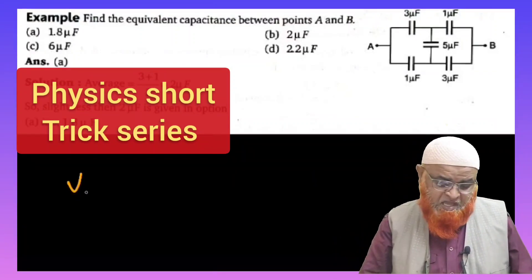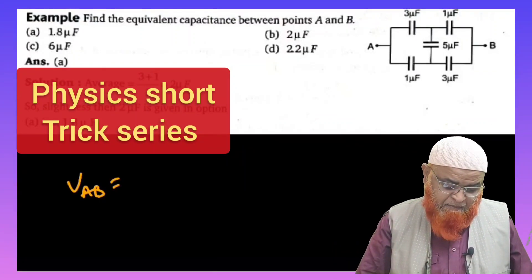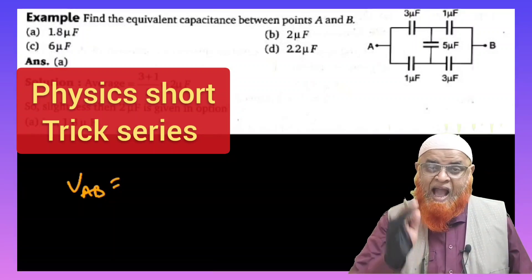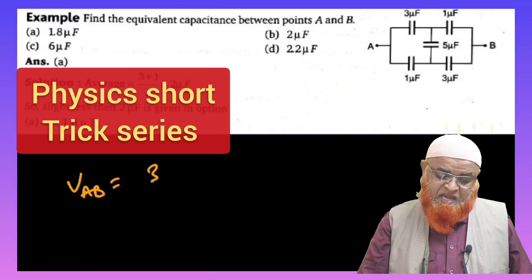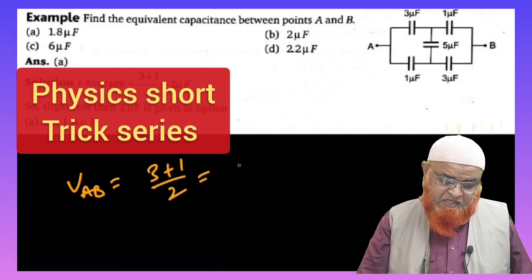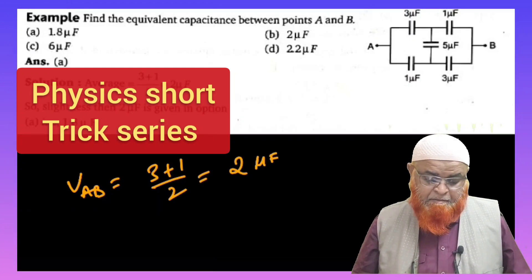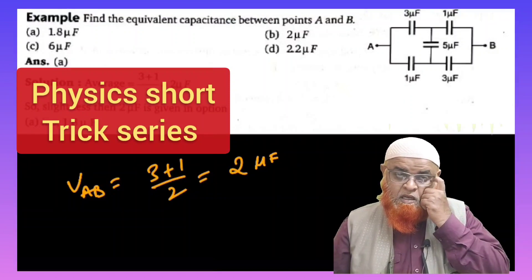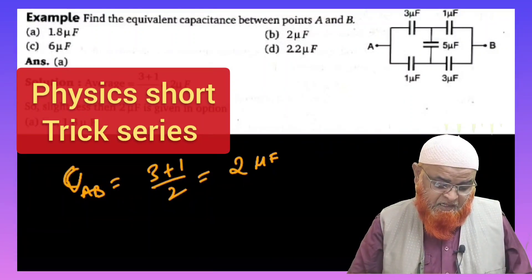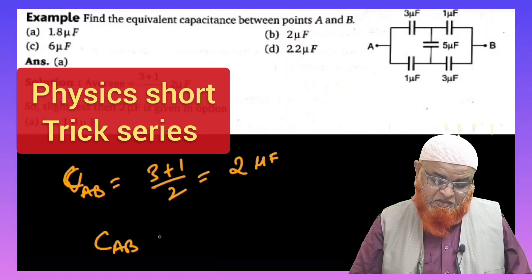C_AB is equal to average of the two capacitors given in diagram, that is 3 plus 1 by 2, which is going to be 2 microfarads. Okay, but whatever may be the answer here, that is capacitance across A and B...